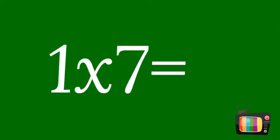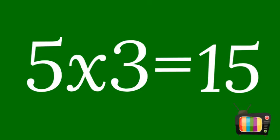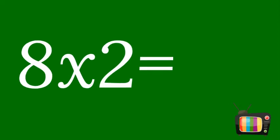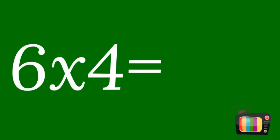1 times 7 equals 7. 5 times 3 equals 15. 8 times 2 equals 16. 6 times 4 equals 24.